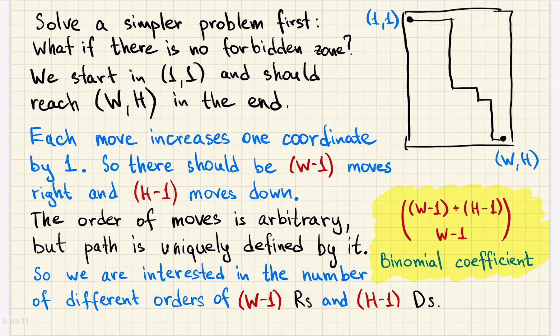Let's try to solve a simpler problem first. What if there is no forbidden zone? It's not strictly a sub-case of our problem because in our problem the forbidden zone should be non-empty, but if it is of size 1, there is only one path that goes through the forbidden zone, so the answer for this case would be just number of paths without forbidden zone minus 1, so we should be able to solve this problem.